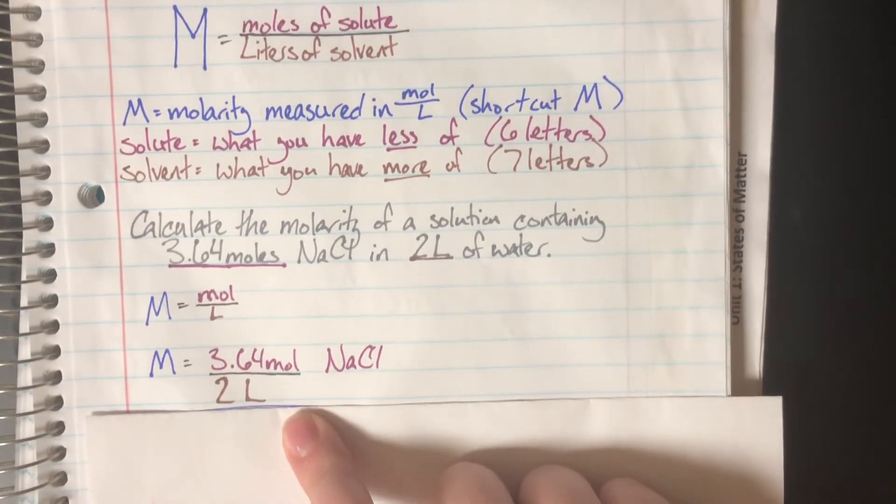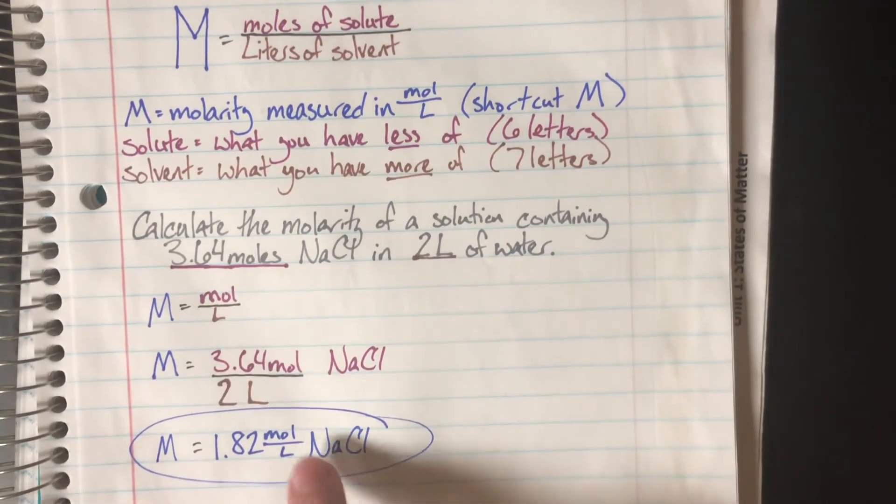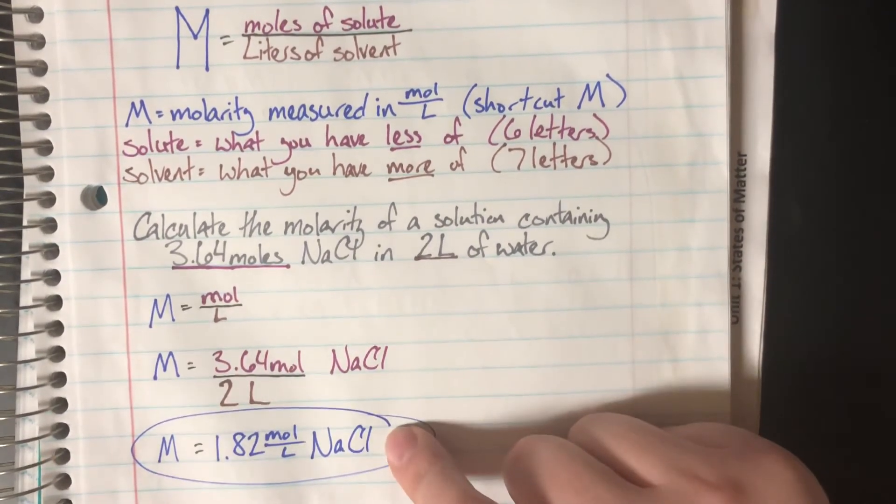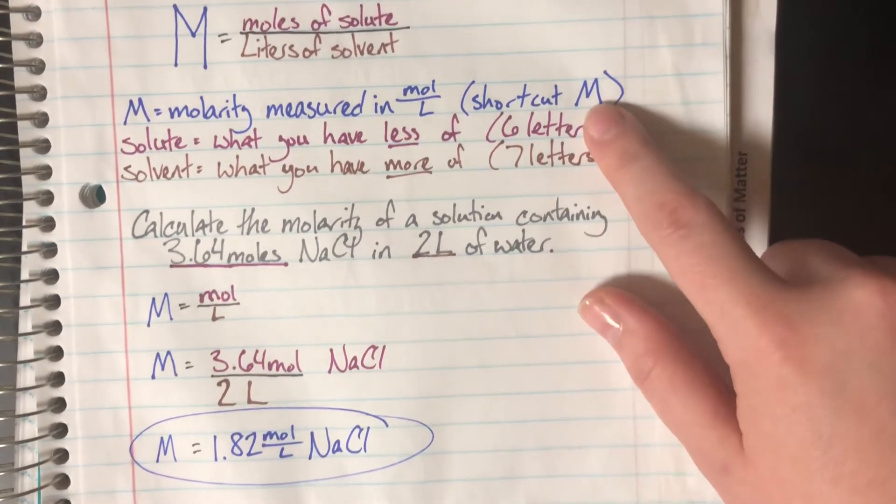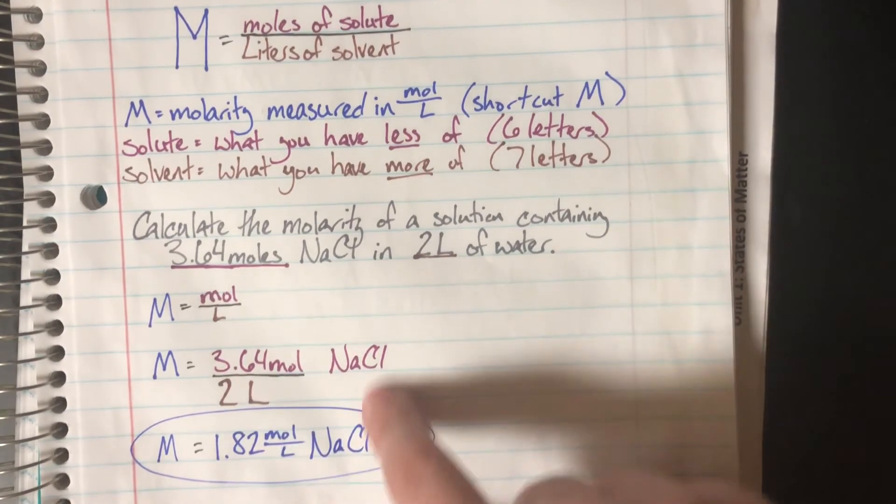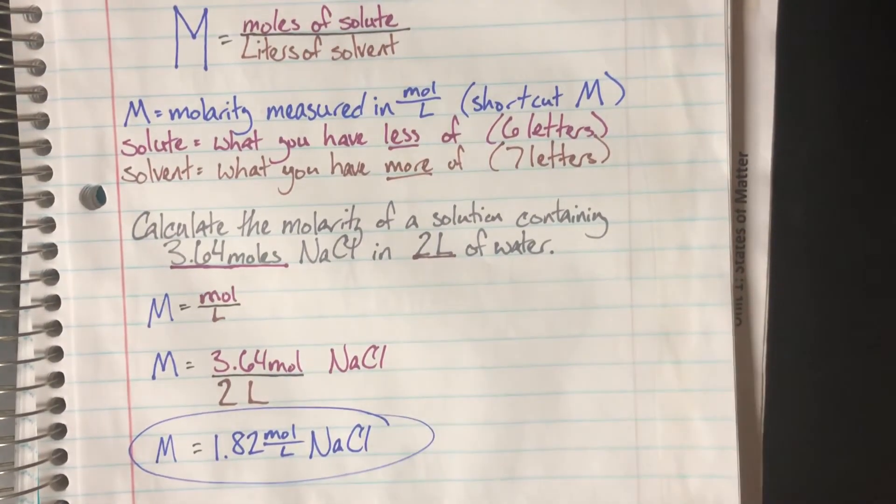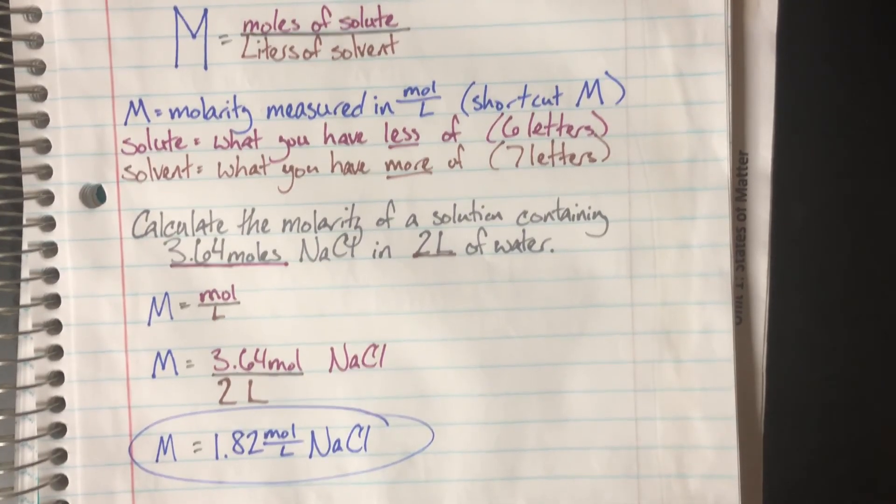Remember, I could write this as moles per liter or with a capital M for molarity. We kept sodium chloride because it's the solute, and the solute is what's involved in any reaction—that's the only thing I actually care about.